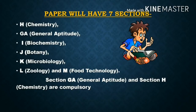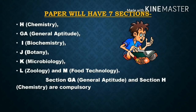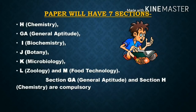Let's discuss in detail the subjects in GATE Life Science. There will be a total of 7 sections. Section 1 is General Aptitude, Section 2 is Chemistry, followed by Biochemistry, Botany, Microbiology, Geology, and Food Technology. Importantly, General Aptitude and Chemistry are compulsory — you cannot skip the Chemistry portion. For Chemistry, you can prepare from Class 11 and 12 books, as the syllabus mainly comes from that level.